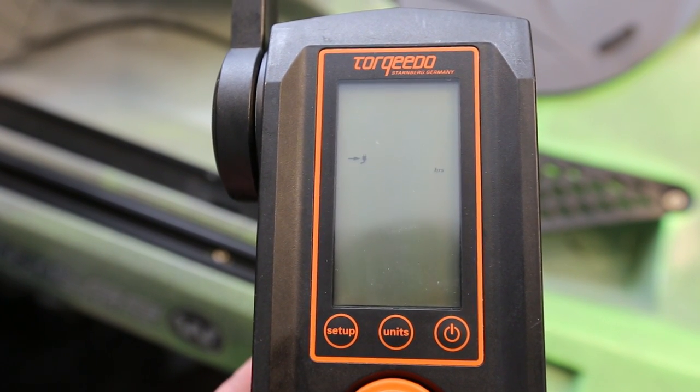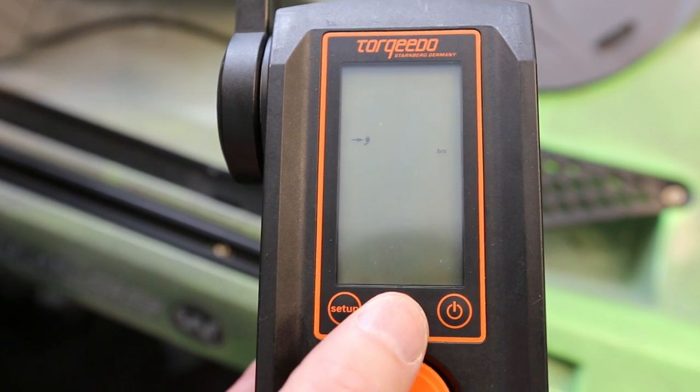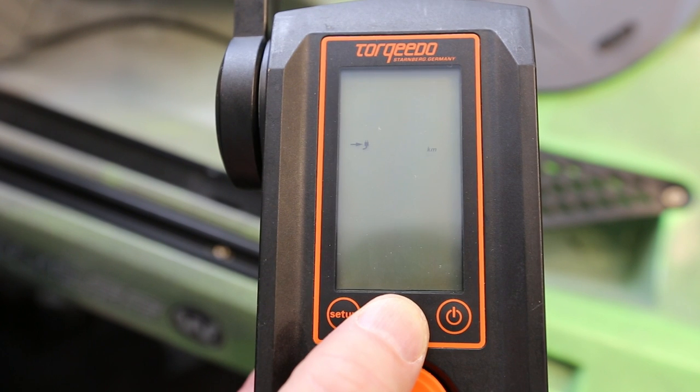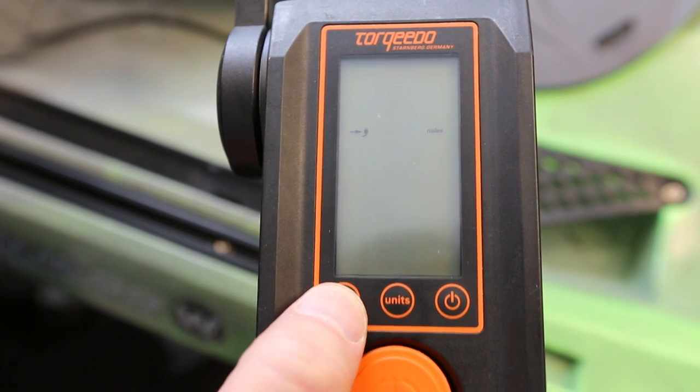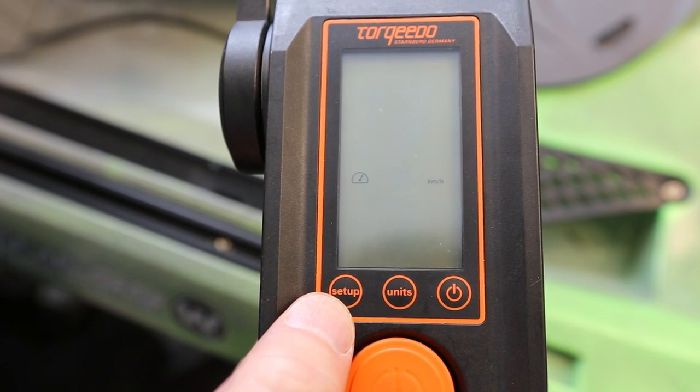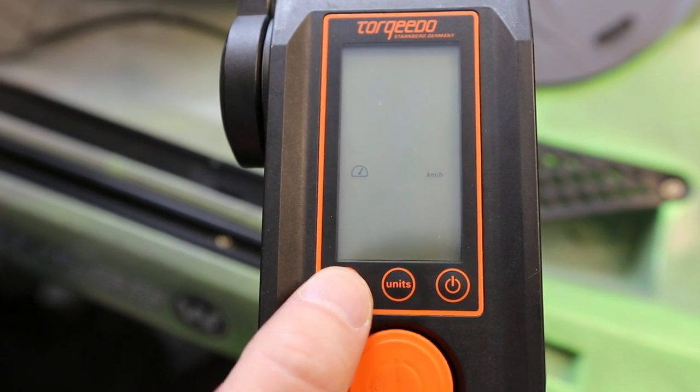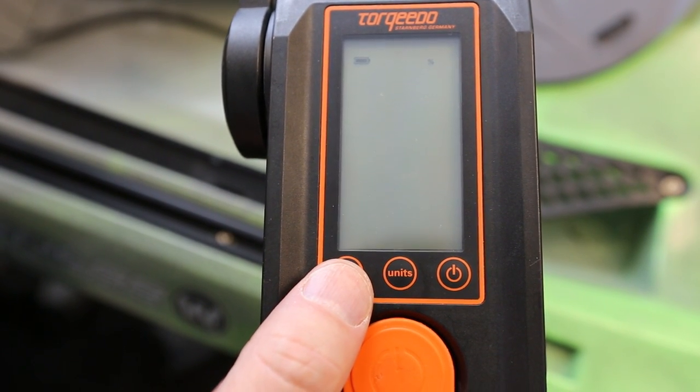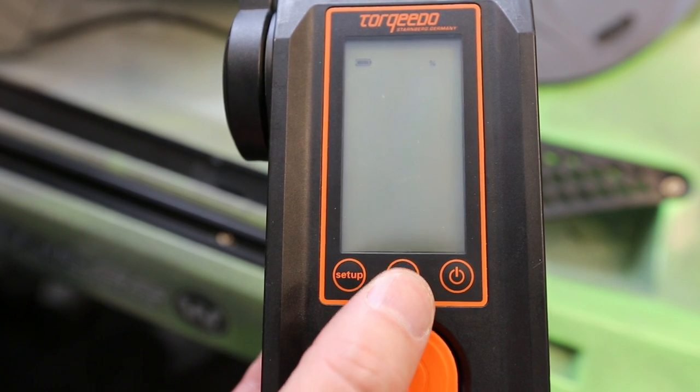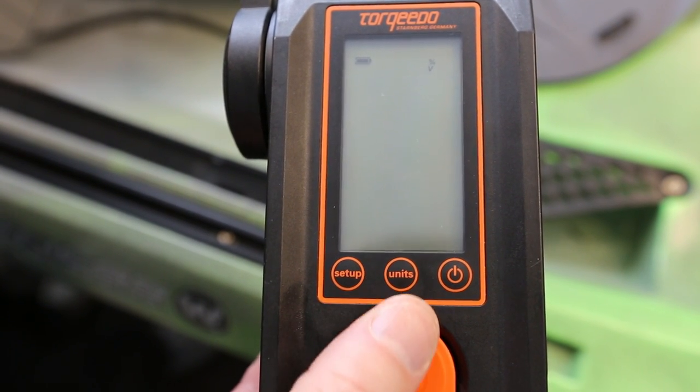Use the Setup button to set the units for the display. You enter the menu by pressing the Setup button for three seconds. First, you can select the units in which the remaining range is displayed. Press the middle button to select between kilometers, American miles, nautical miles, and hours. You confirm your selection by pressing Setup again.